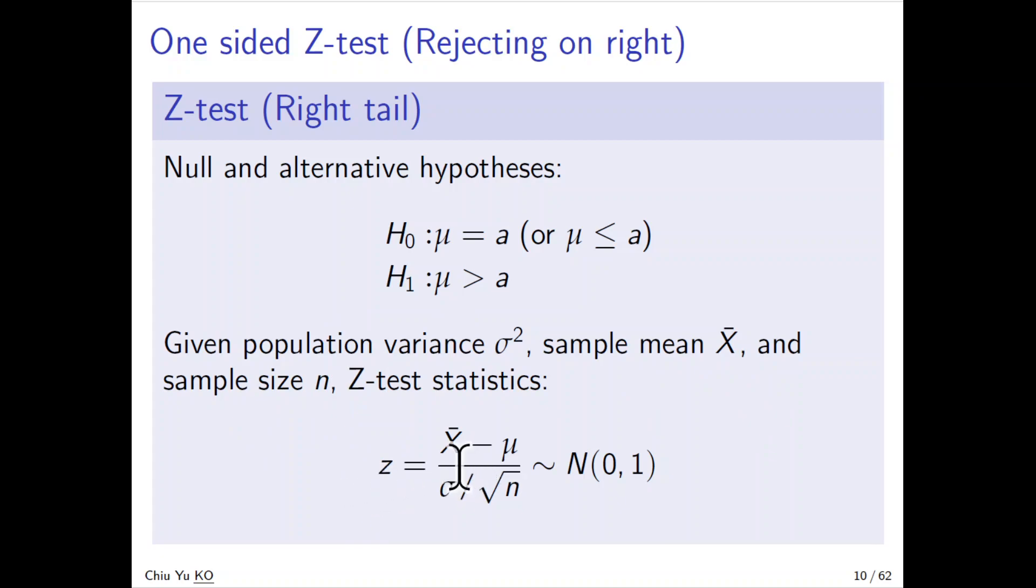Given the population variance and sample mean, the test statistic is z = (x̄ - μ)/(σ/√n), which follows standard normal N(0,1). This we have covered in the previous chapter. By virtue of the central limit theorem, this standardized form is indeed standard normal when n is large enough.